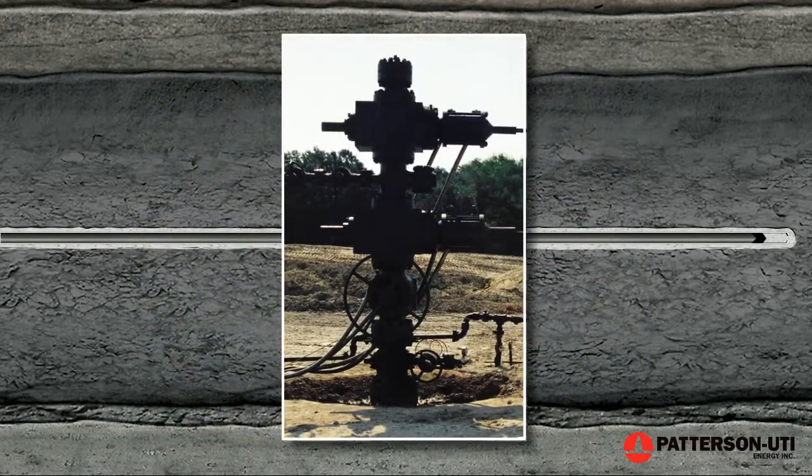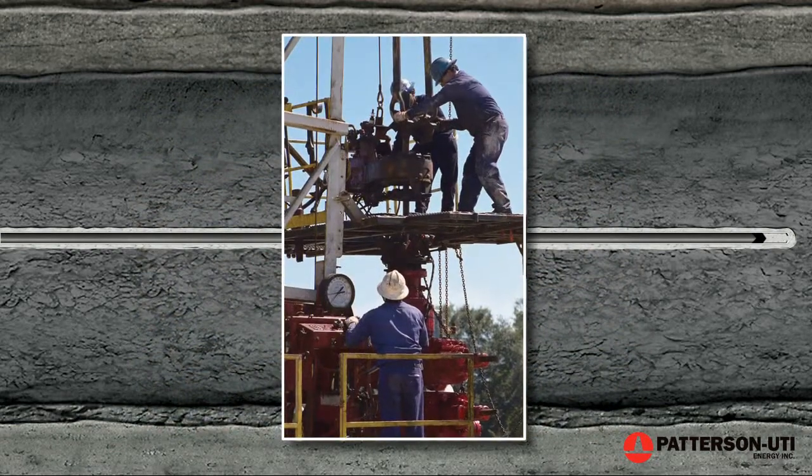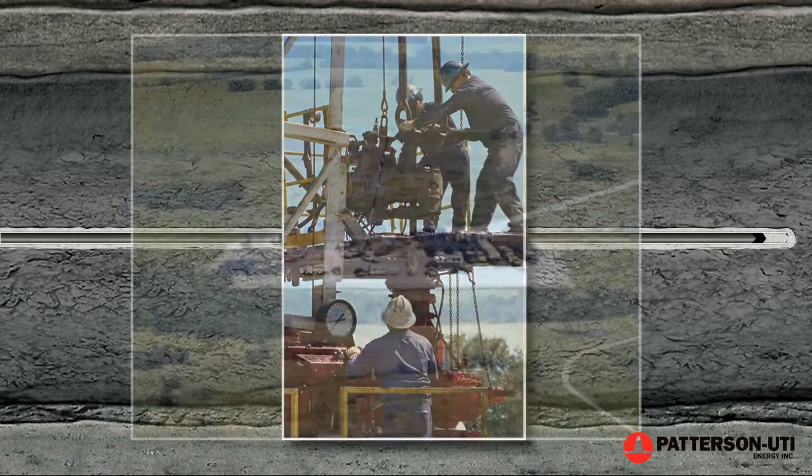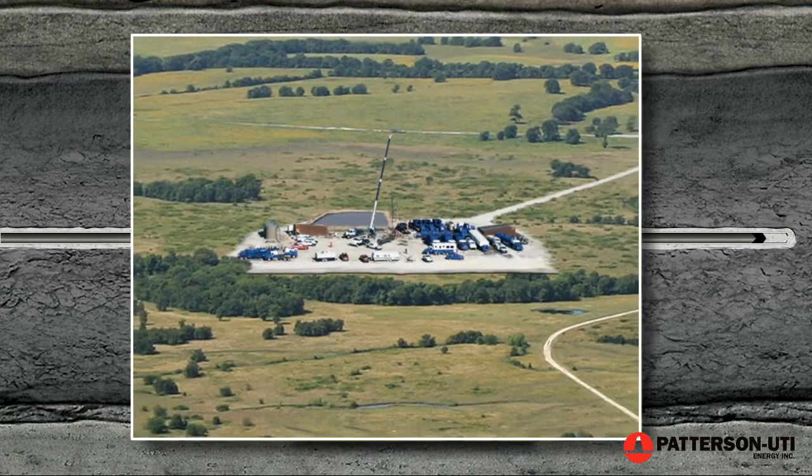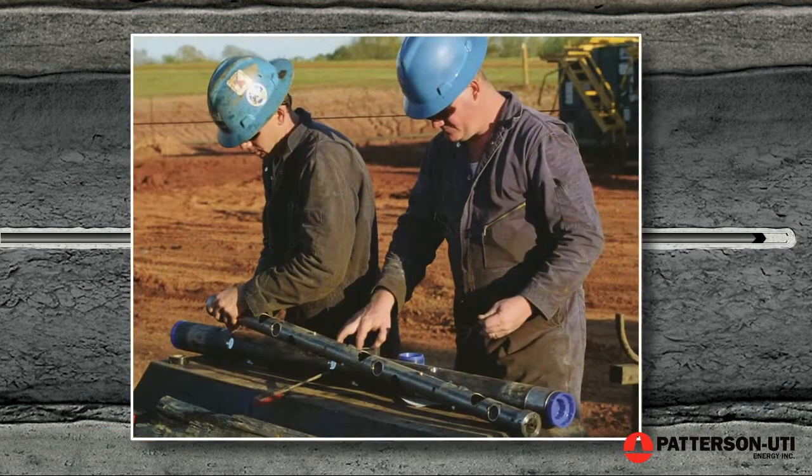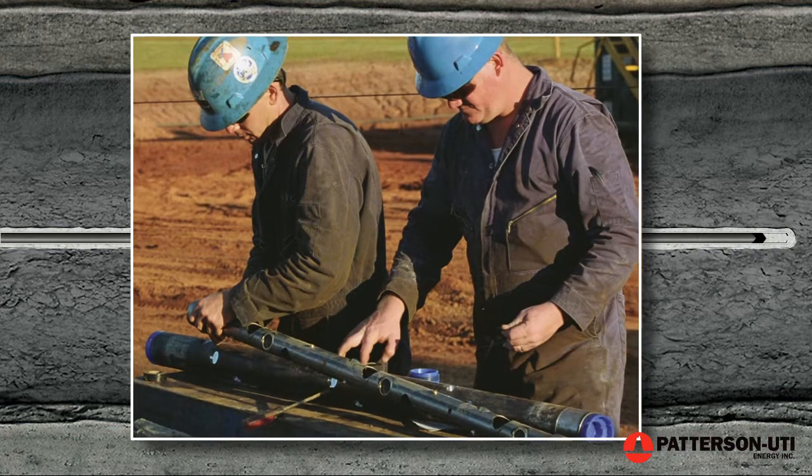A temporary wellhead is installed and the location is prepared for the service crew who will perf, frack and prepare the well for production. The first of these steps is to perf or perforate the casing.